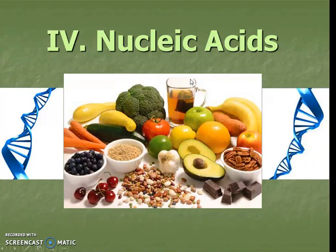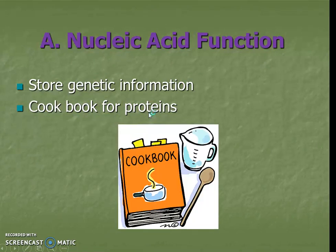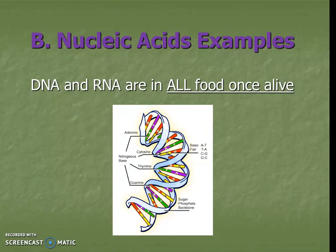Last but not least, we have nucleic acids. This is the one we don't really think about with regards to food. Nucleic acids are all about storing genetic information and having the information to build or synthesize proteins. Our two major examples are DNA and RNA. Anything that was once alive, whether it was an animal or a plant, is going to have DNA or RNA in its cells. We could take a banana, a strawberry, or a piece of salmon and extract DNA from its cells — super cool.